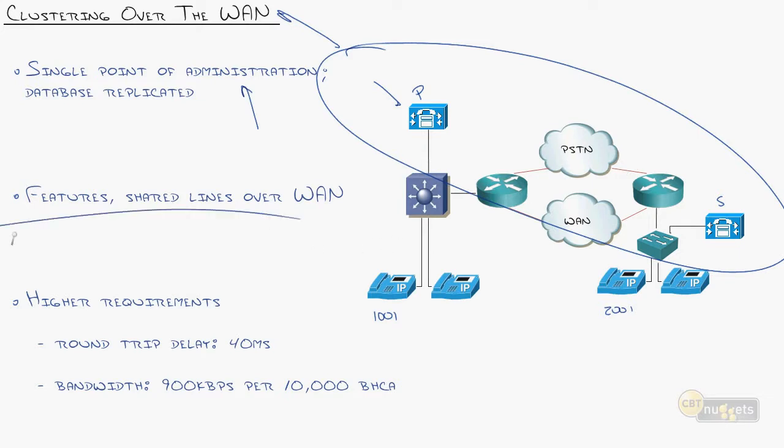You get all of your features. You could have shared lines over a WAN connection where for instance a call comes into 1001, and it rings both 1001s. There's a lot you're able to do with your features. The big consideration you have is this does have tight requirements, and I would say this one kills it for a lot of people: round trip delay of 40 milliseconds. That's what it needs to keep the database in sync. So if you're talking in America coast to coast, like California to New York, it's like game over. You're not going to be able to get that kind of delay just because of the sheer physical distance that you have to travel.